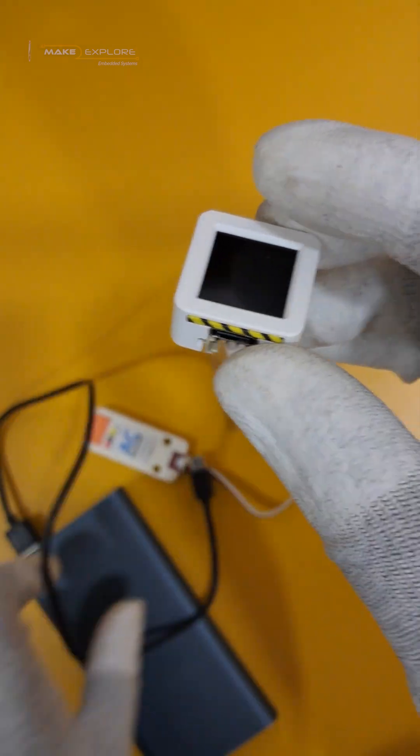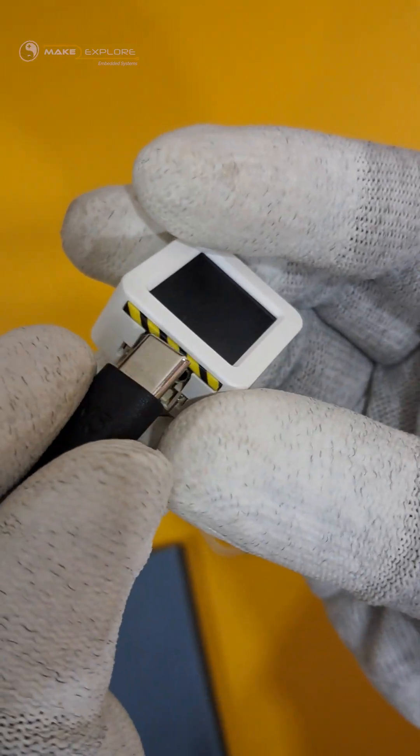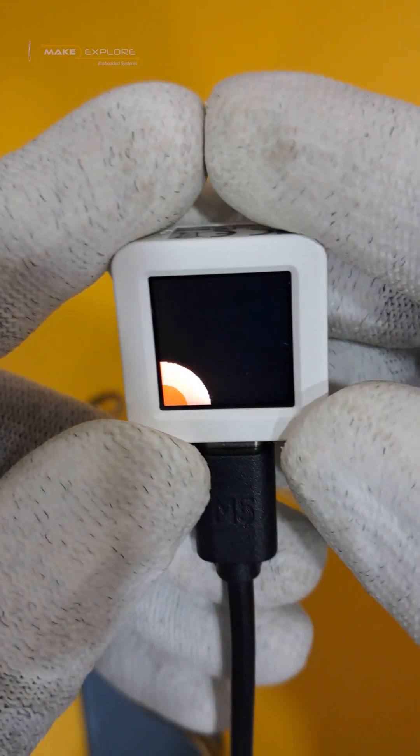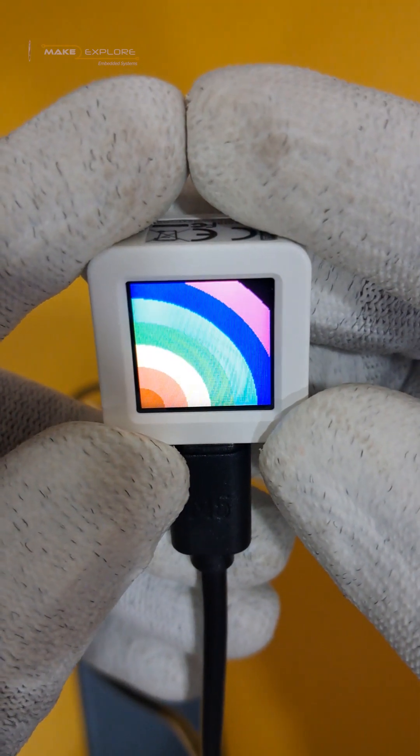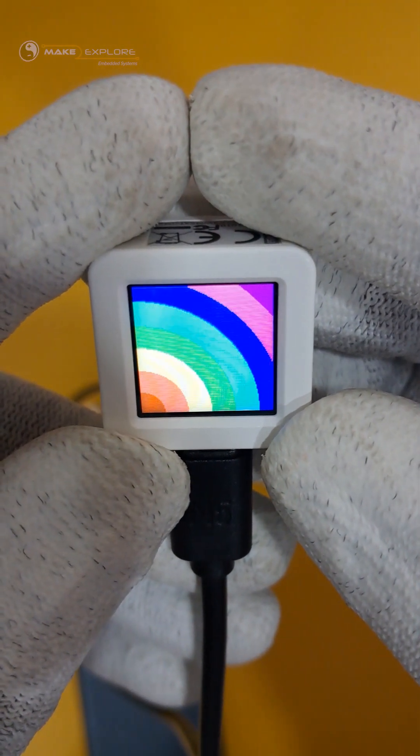Now, let's power on the board and see the user demo. For that, let's power it via USB power bank using this Type-C USB cable. You can see this IPS screen powers up with a vibrant RGB display. This is cool, isn't it?